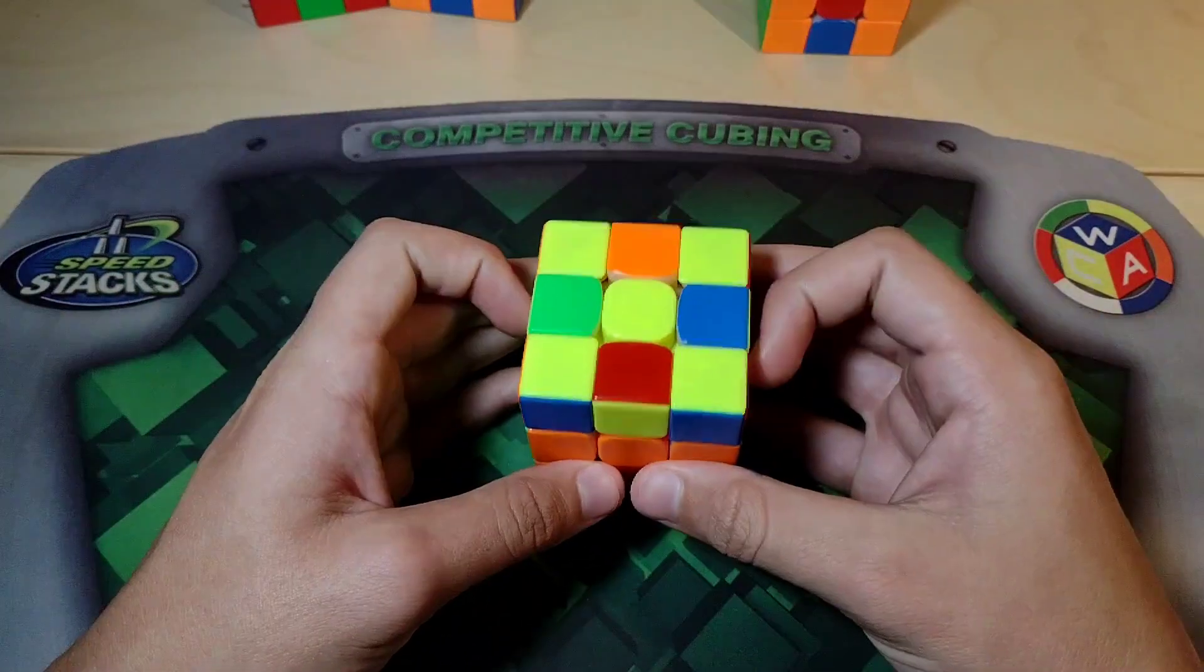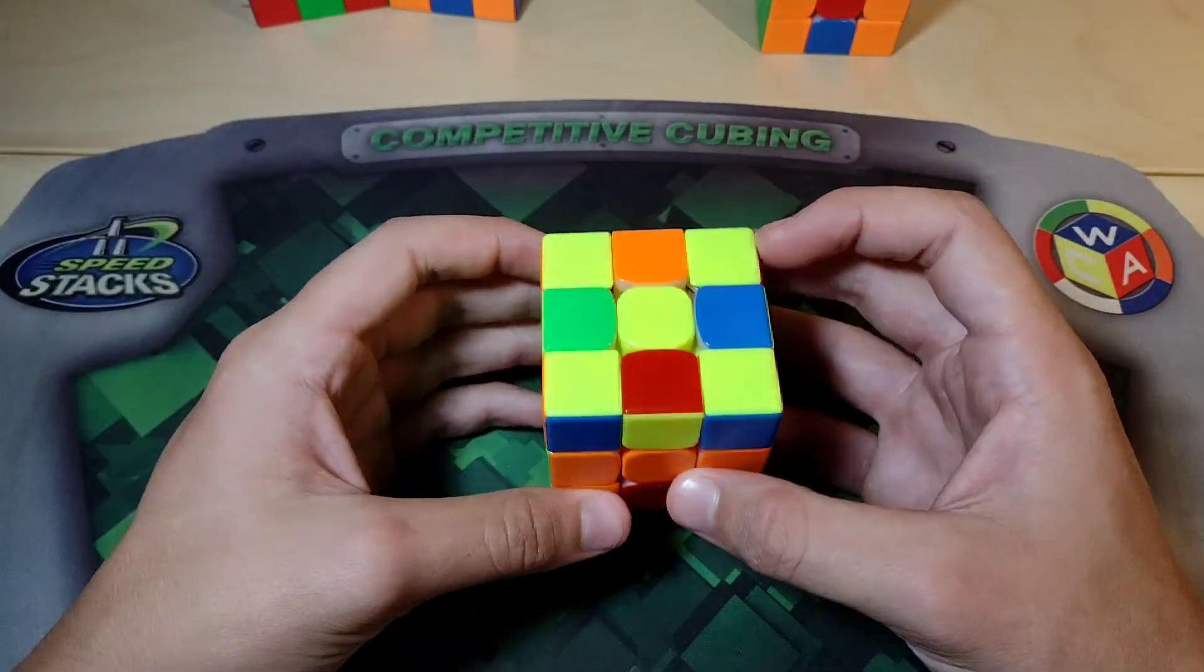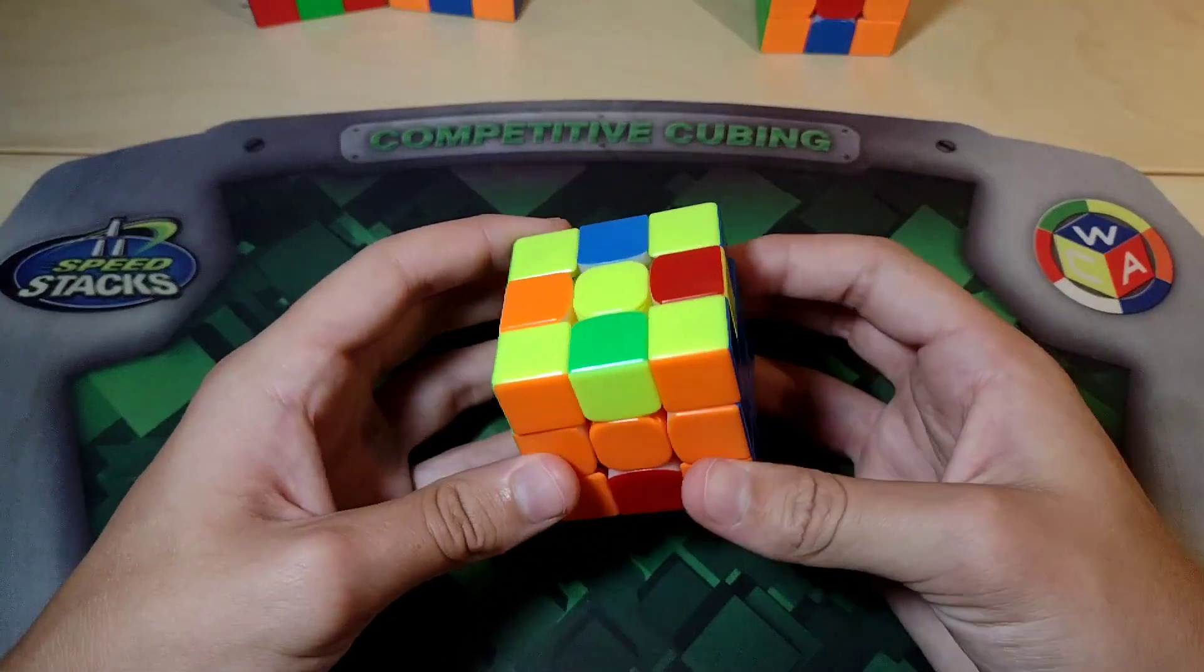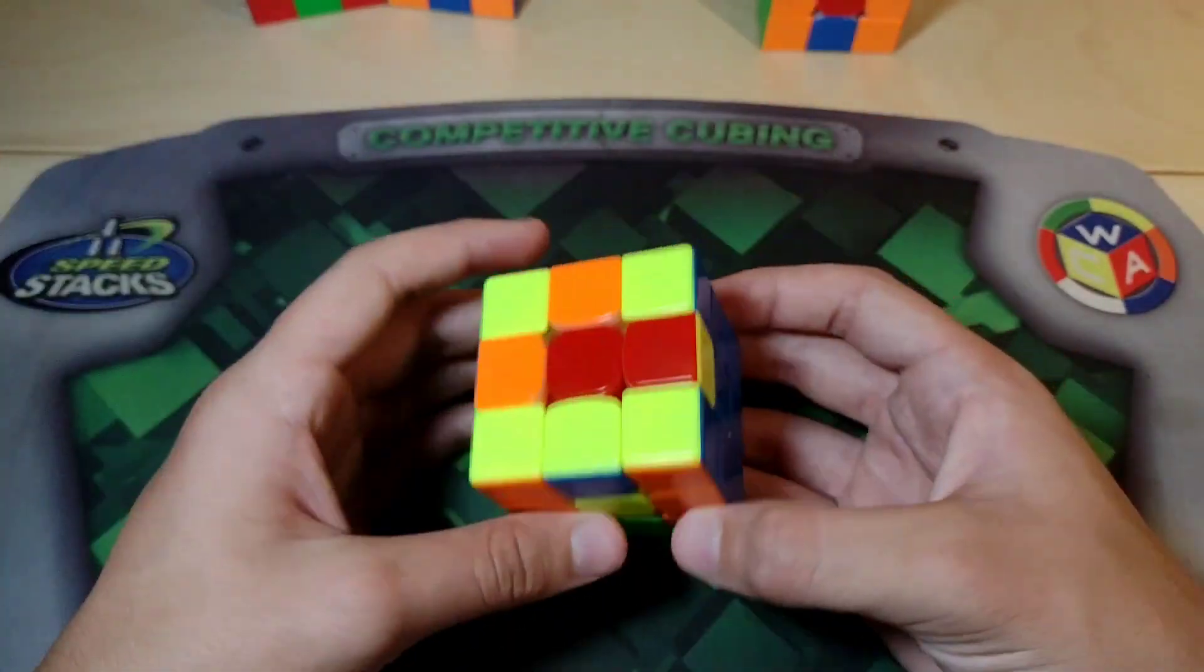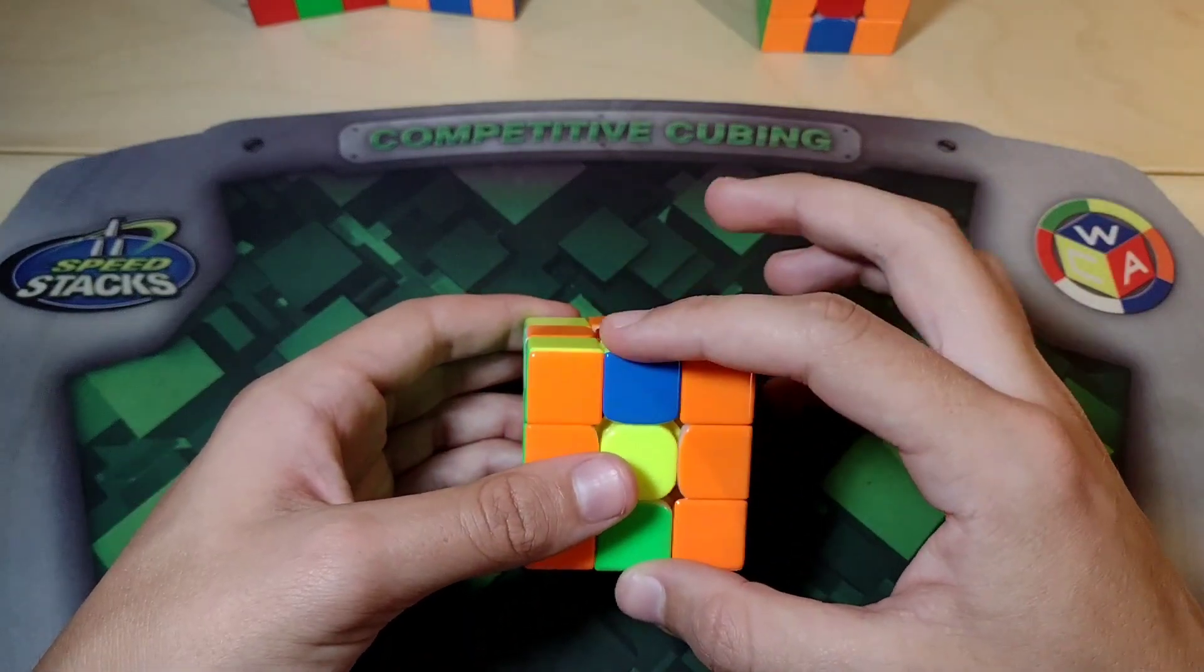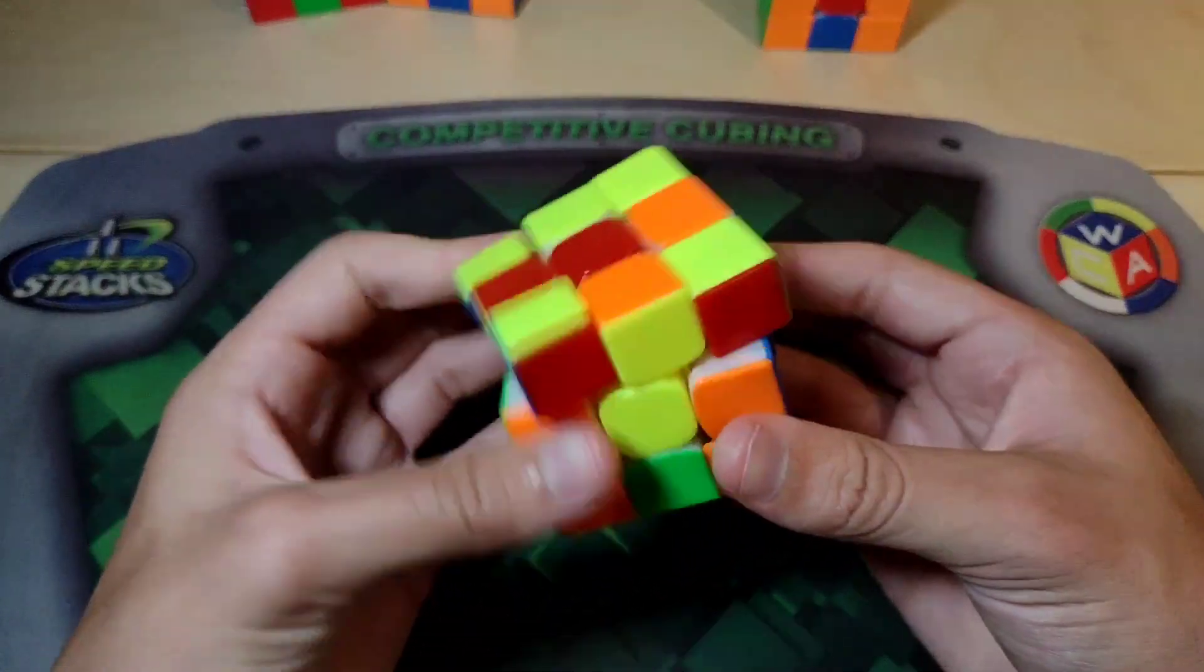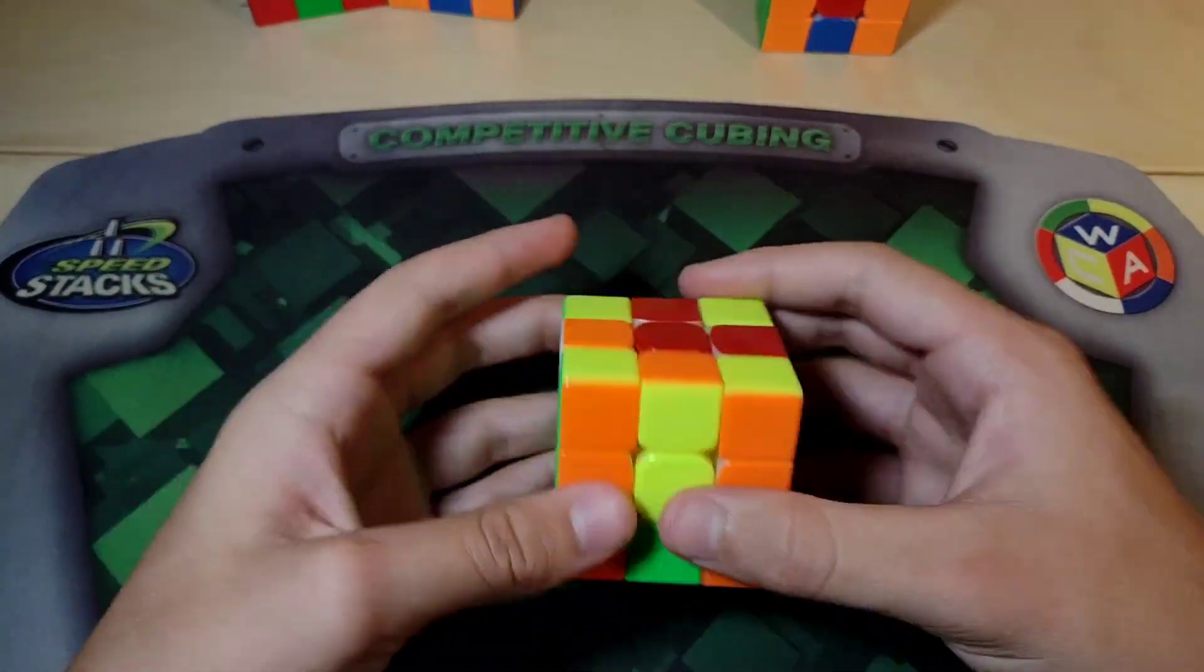For our next case, we have the LR edges both opposite in the top layer instead of adjacent, like the previous case. For this one, we're going to place them in the middle slice, like so. And then we're going to either do an M' or an M, which will solve EO. Now, the centers are misoriented, but EO is still solved. And so we can just treat this like we would normally during LSE, where we just insert this edge to the bottom, and we have our EOLR solved. As you can see, that's quite efficient, despite the fact that it's not a good arrow setup. It's still quite efficient and good.